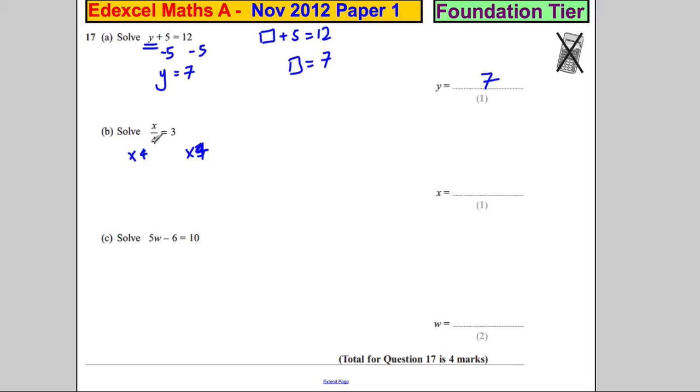Because we have a number divided by 4 equals 3, if we multiply both sides by 4, that number divided by 4 then multiplied by 4 is just that number. And 3 times 4 is 12. And 12 divided by 4 is 3, it's the right answer.